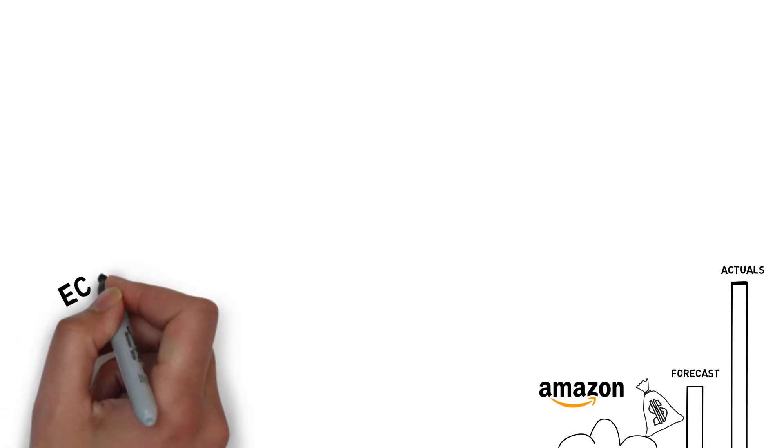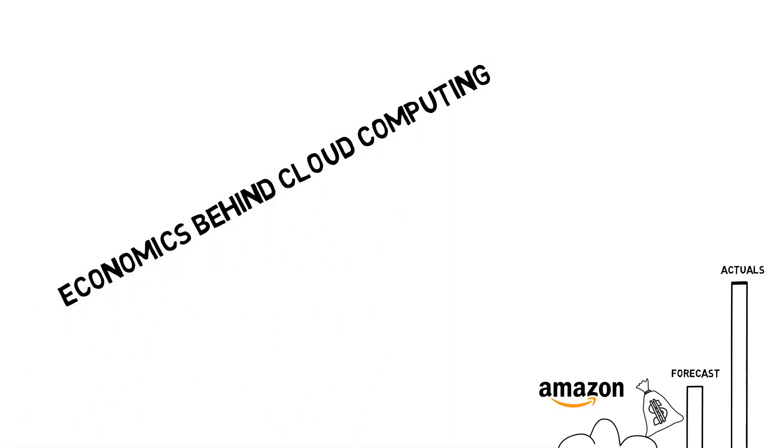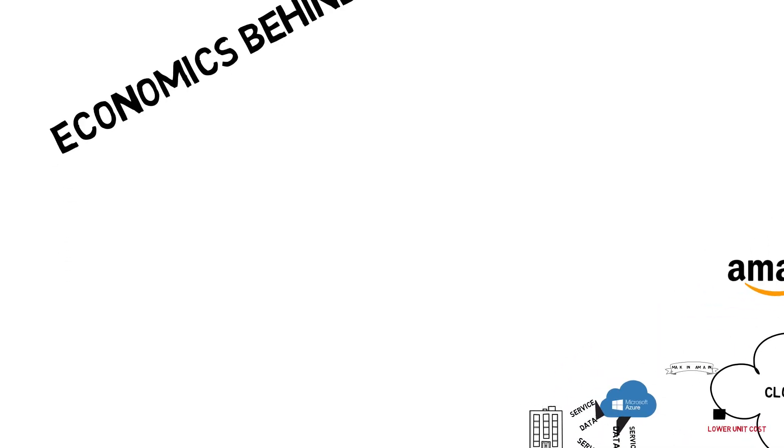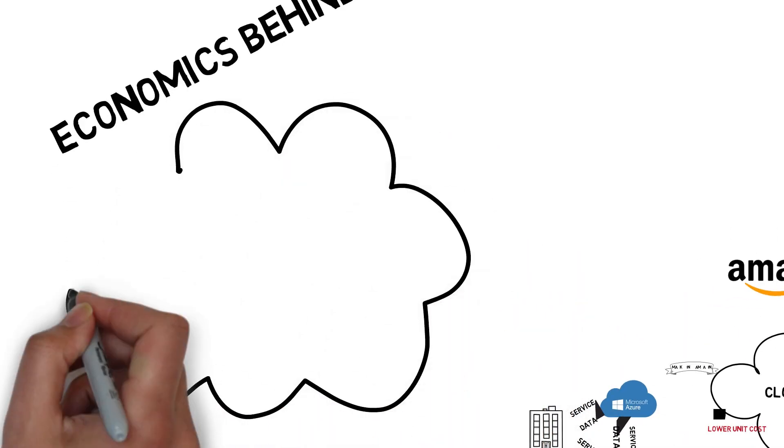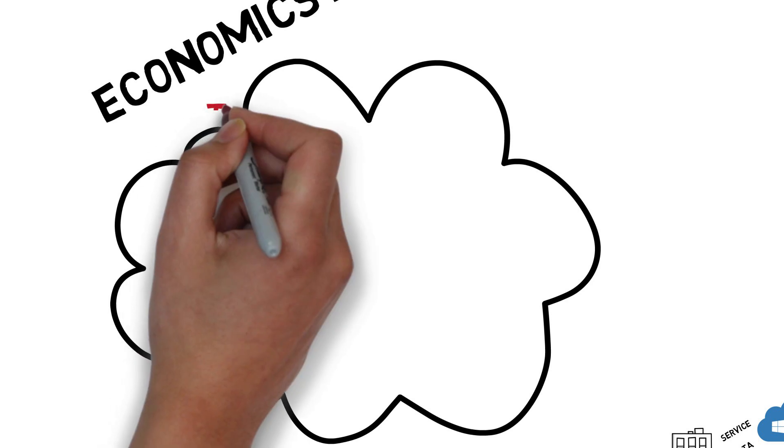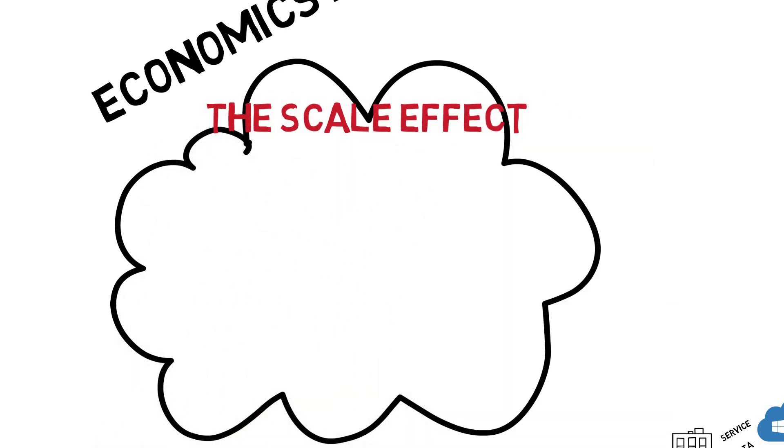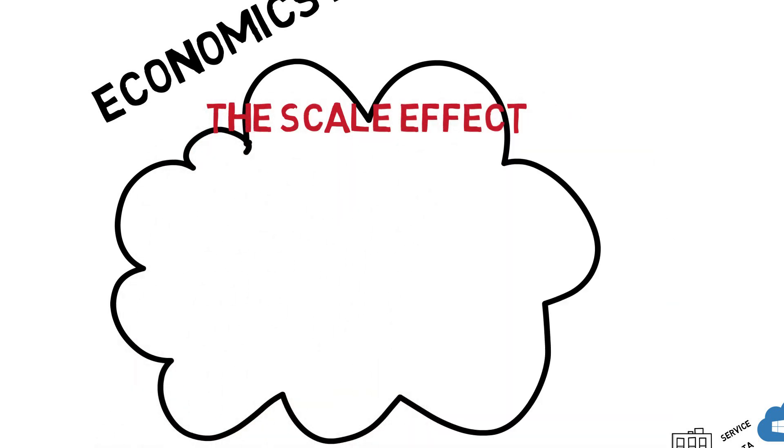So, how do we explain the rapid development of cloud computing? What are the economic rationalities behind it? First of all, the scale effect. The scale effect refers to the increase in economic benefits, which is brought about by the expansion of production scale, and is actually one of the most common advantages of the internet giants.